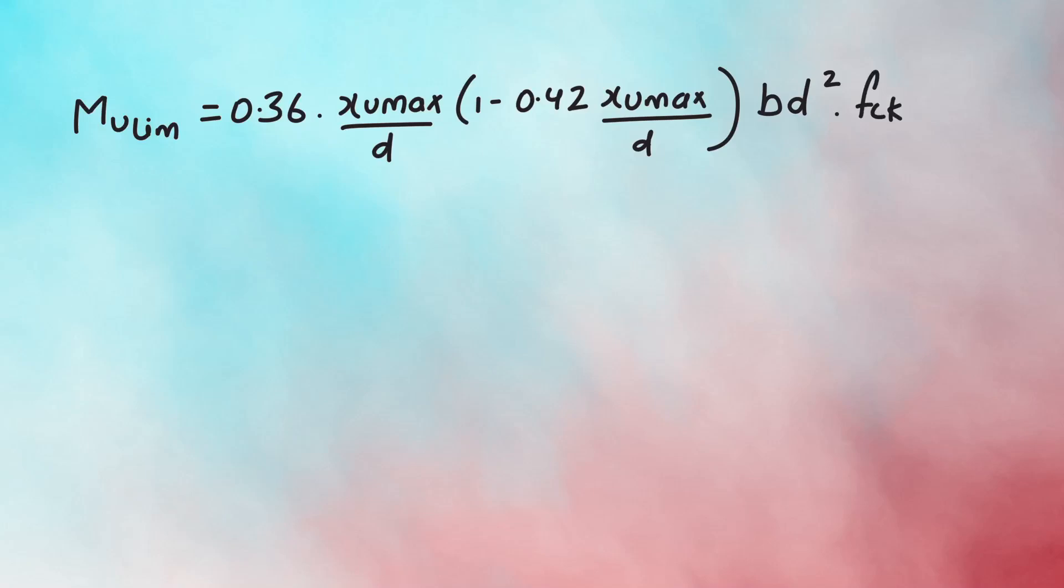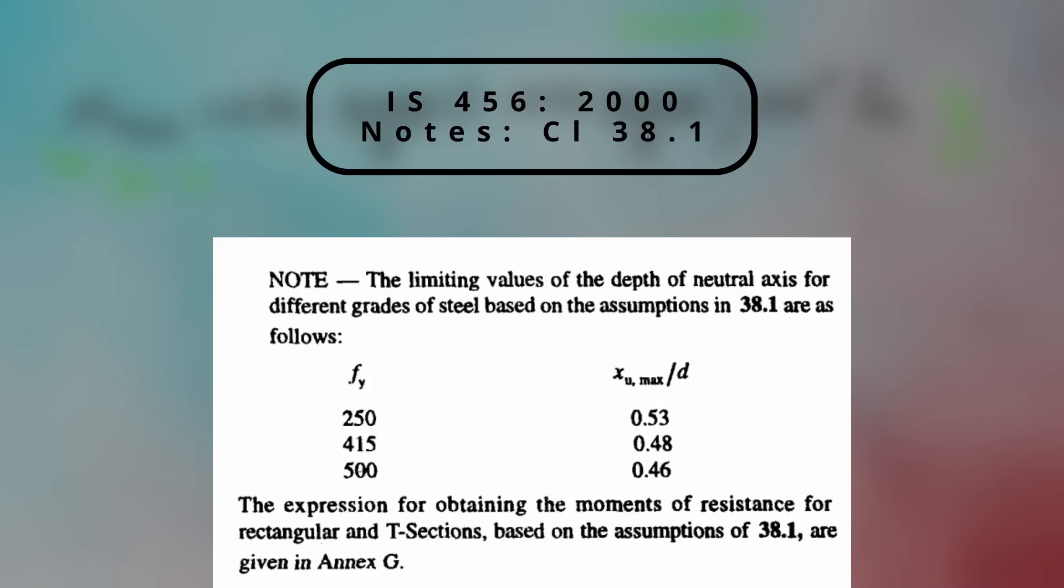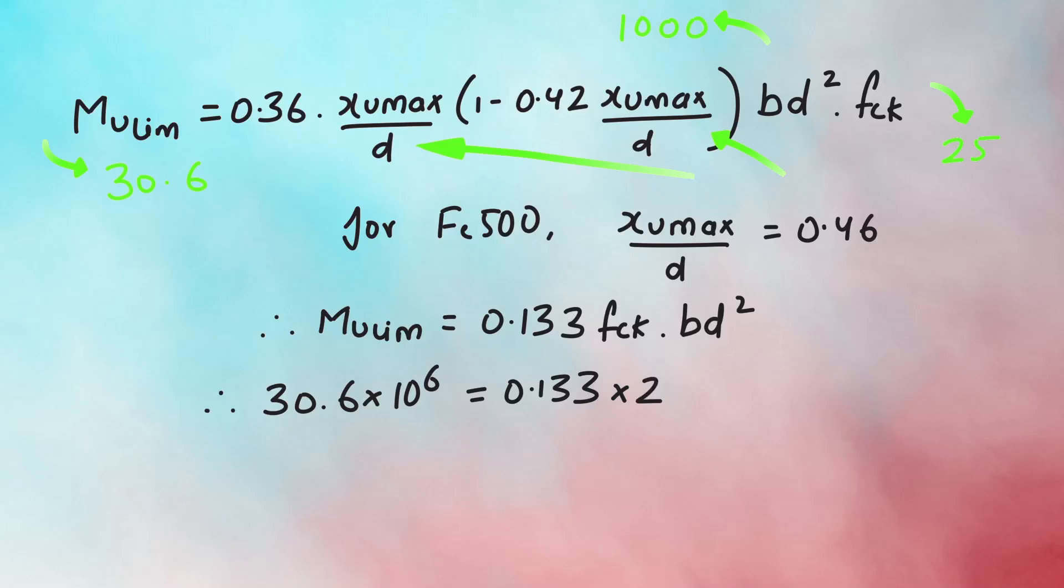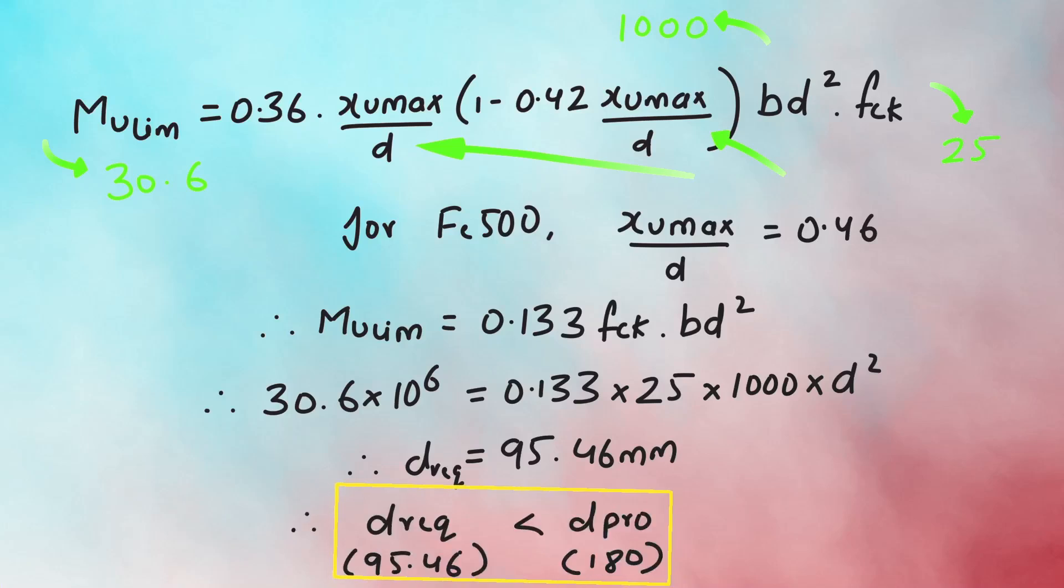So, in this equation, we have the values of Mu, Fck and B. To obtain the values of Xumax by D, we have to refer to the notes of 38.1 which shows different values of Xumax by D for different grades of steel. Since we have used Fe500, we will substitute the values of Xumax by D in our equation. We get Mu as 0.133 Fck BD square. Now, substituting the values of Mu, Fck and B gives the required depth of slab for the factored bending moment as 95.46mm. On comparing with the provided depth, the required depth is less. Hence, our assumption is correct and we can proceed with the effective depth of 180mm.